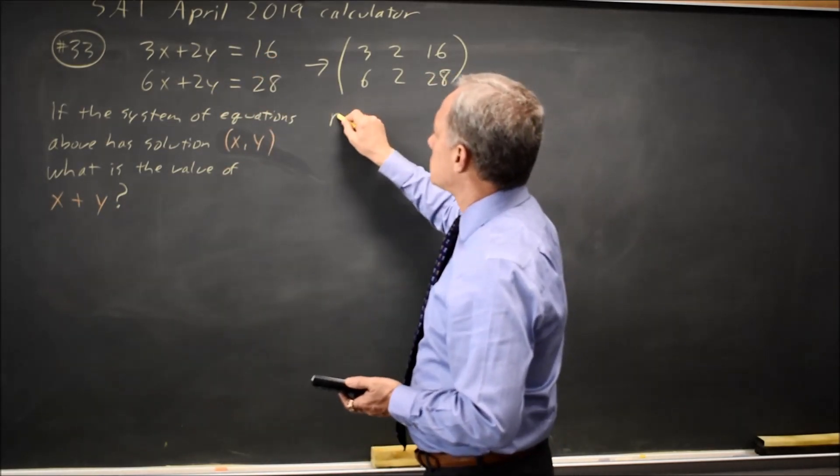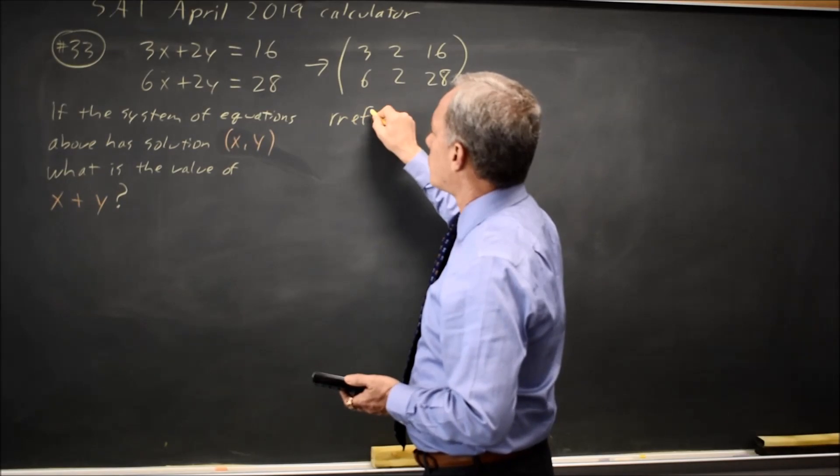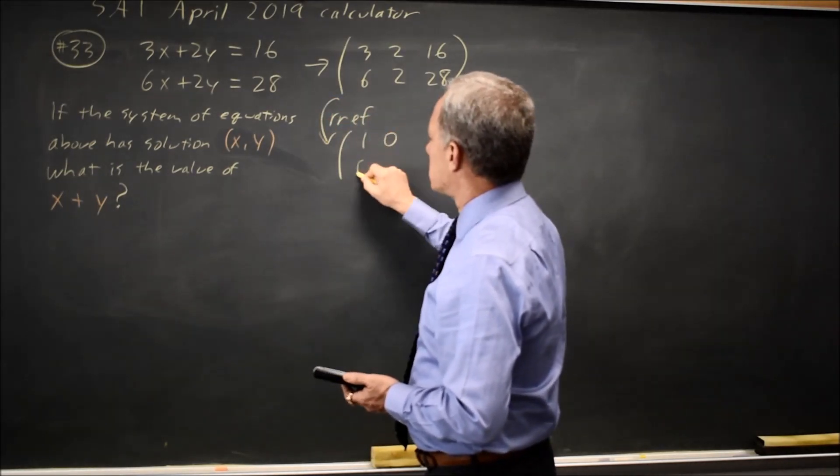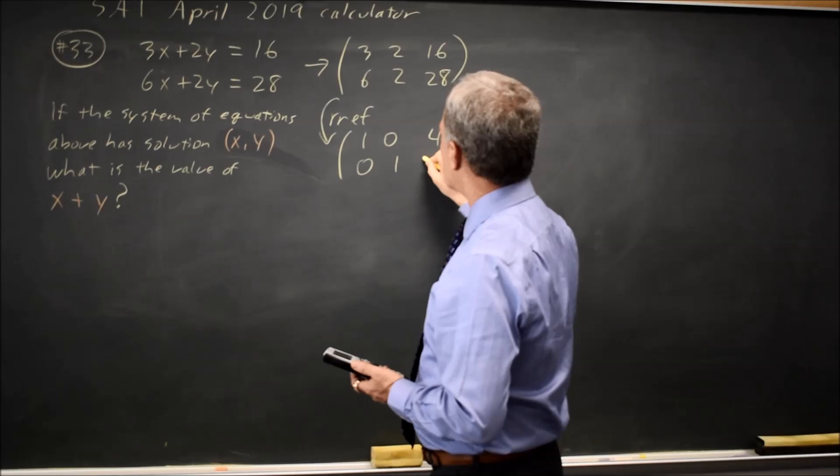And then if I ask for a reduced row echelon form of that matrix, I get 1, 0, 0, 1, 4, 2.